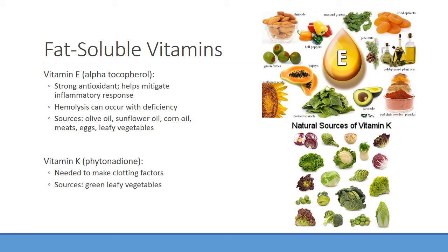Moving on to fat-soluble vitamins: vitamin E or alpha-tocopherol is a very strong antioxidant that helps mitigate the inflammatory response. Extensive inflammation generates free radicals that can destroy bacteria but also hurt us if unchecked — vitamin E helps prevent some of that. With too much oxidation toward red blood cells, it can lead to hemolysis, where damage to red blood cell membranes causes them to burst. Vitamin E acting as an antioxidant can prevent this.